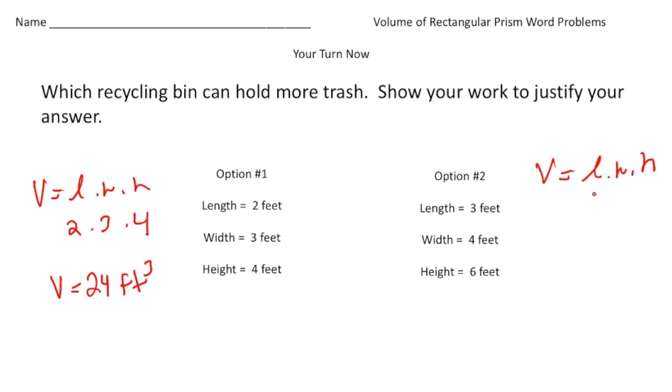And then this one, I'm going to plug in a 3, and a 4 and a 6. And 3 times 4 is 12, 12 times 6 is 72. So the volume of this one is 72 cubic feet. So the second bin is much larger than the first bin. And that's our answer. All right, how'd you do?